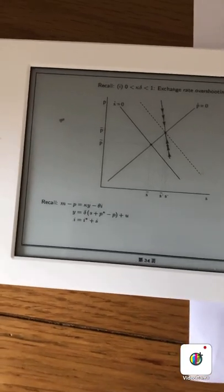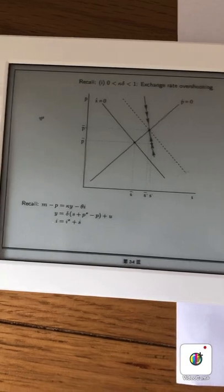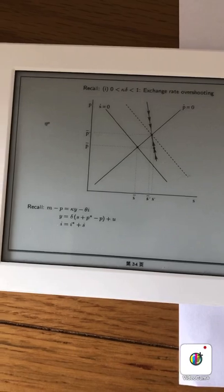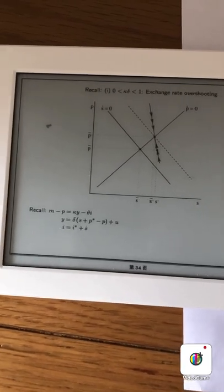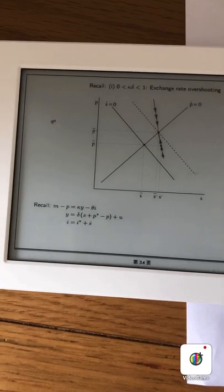To check, we can focus our attention to the third equation. So if we have a lower i on the left hand side, then that must be accompanied by a decrease in s on the right hand side.